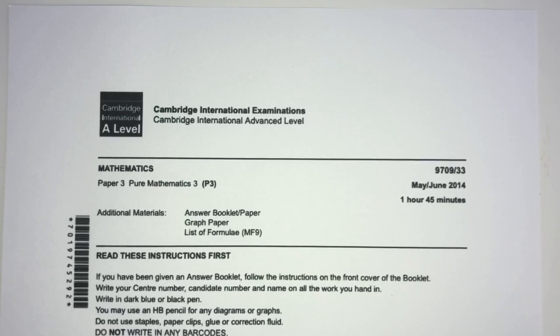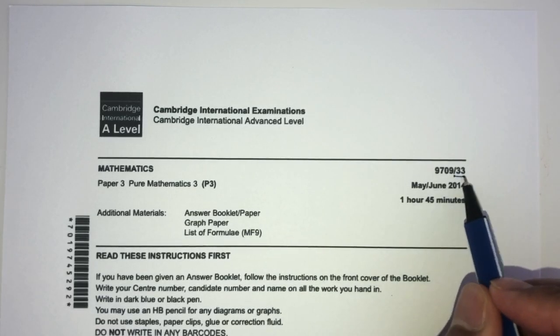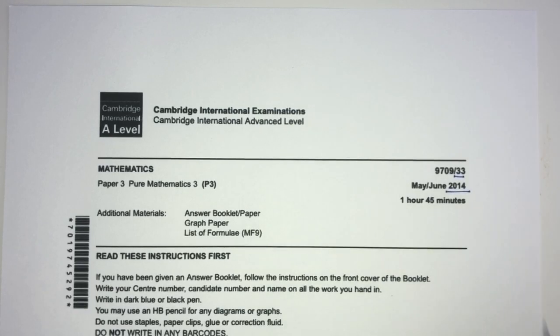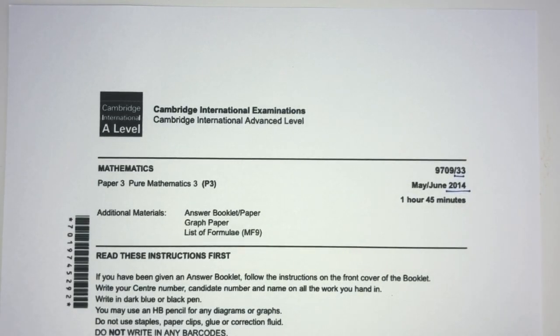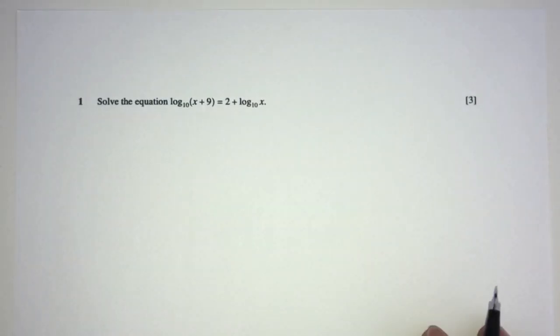Hey, what's up? Welcome back to this new video. This one is paper 33 of May June 2014 of A-level math paper 3. Now with that being said, let's move on to the questions. Here we have question number one. We have to solve the equation. Solving means finding the unknown. Here we have to find the value of x.